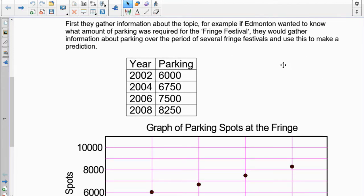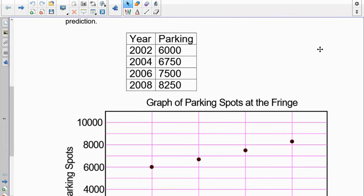We're going to gather information about the topic first, and to do that you have to look into the history. So here's an example I've created. If Edmonton wanted to know what amount of parking was required for the Fringe Festival, they would gather information over several years and take a look at how much parking they had. I've created this information that's totally and completely fake.